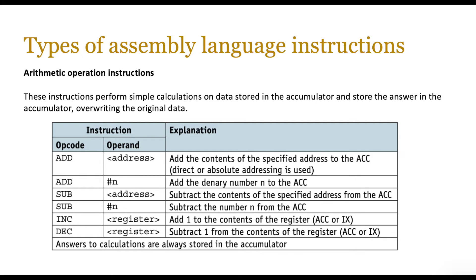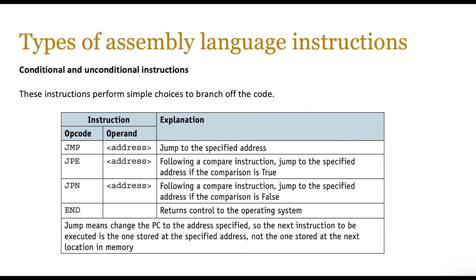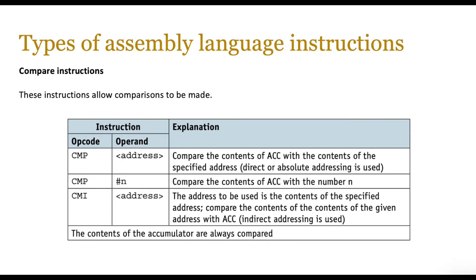The next set of instructions are conditional and unconditional instructions. These perform simple choices to branch up the code — basically if statements. JUMP jumps to a specific address; JPE follows a compare instruction and jumps to a specific address if the comparison is true; JPN jumps to an address if the comparison is false; and END returns control to the operating system. Remember: JMP, JPE, and JPN are opcodes, and the operand is the address which the opcode will be executed on.